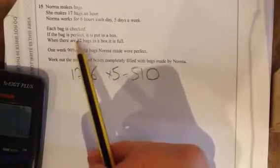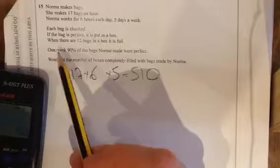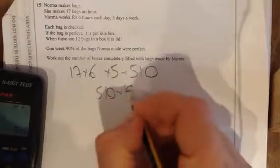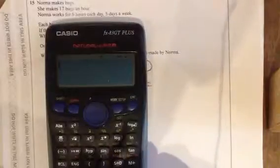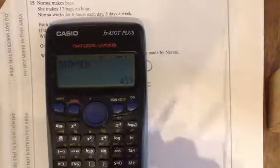So it's checked. If it's perfect. So one week, 90% of bags Norma made were perfect. So 90% of this are perfect. So I'm going to do 510 times 90%. And let's calculate. I'm just going to do 510 times 90%, which is 459.